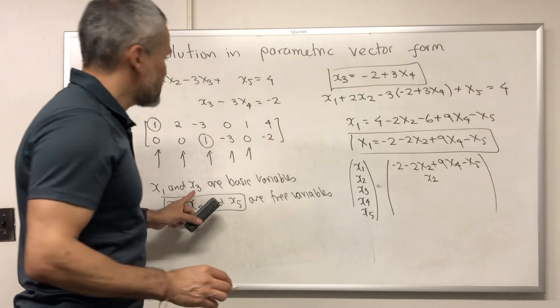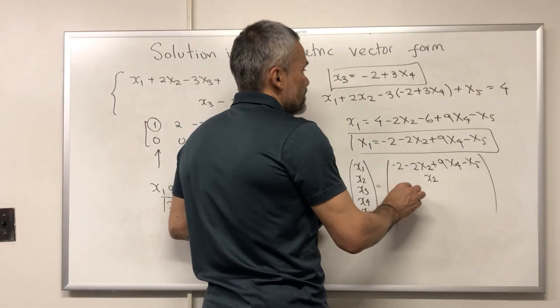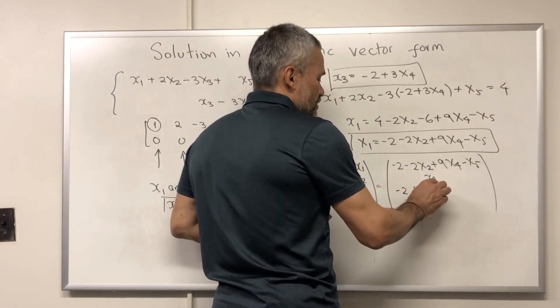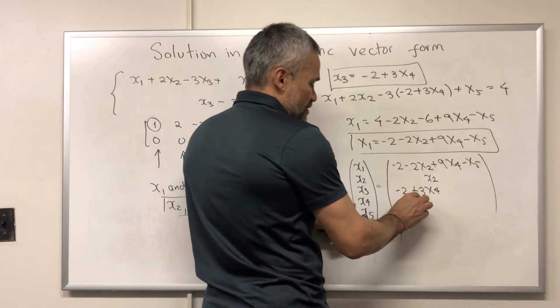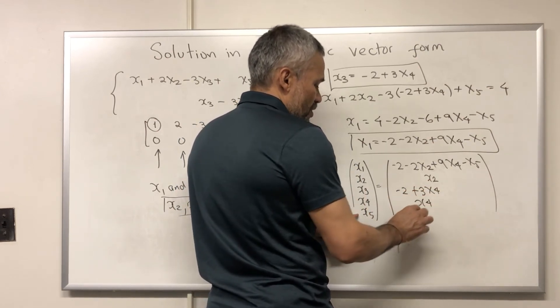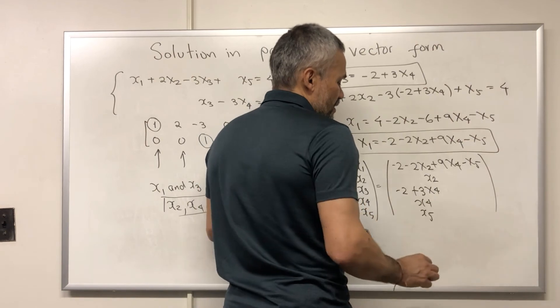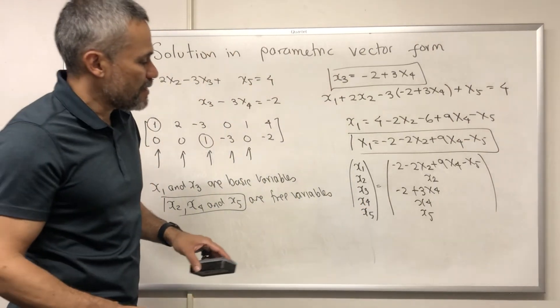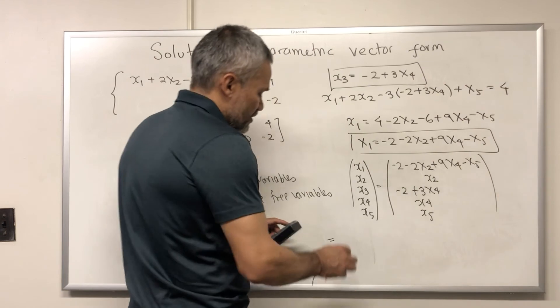x3 is a basic variable, it's just negative 2 plus 3x4. x4 is free, then we just write x4. And x5 is free, then we just write x5. Then this can be written as the vector: